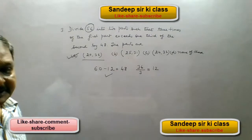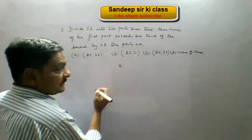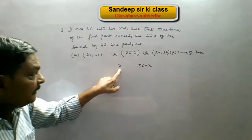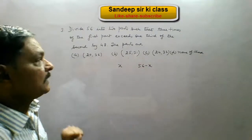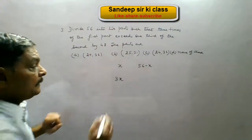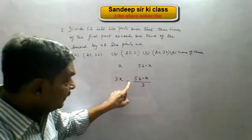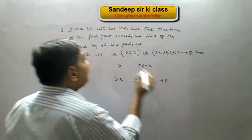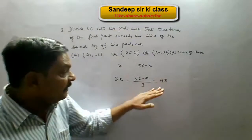From a subjective point of view: if one part is X then the other part is 56 minus X, so their sum is 56. Applying the second condition — 3 times the first part exceeds one-third of the second by 48 — we frame the equation: 3X minus (56 minus X)/3 equals 48.